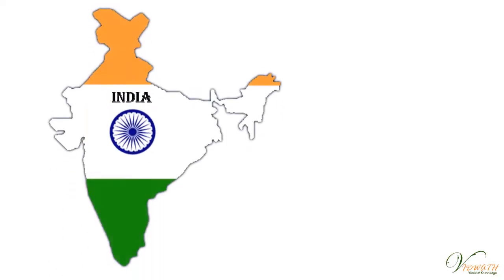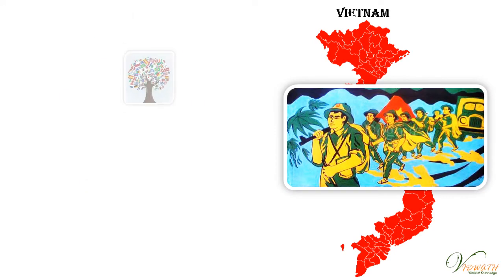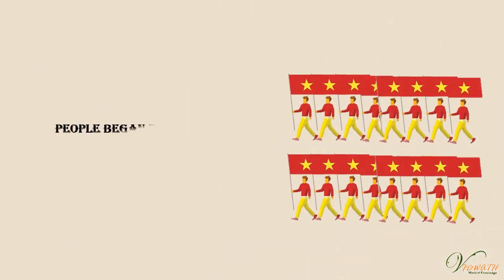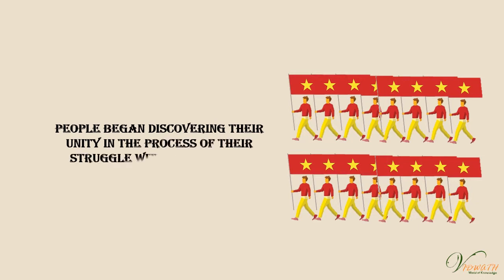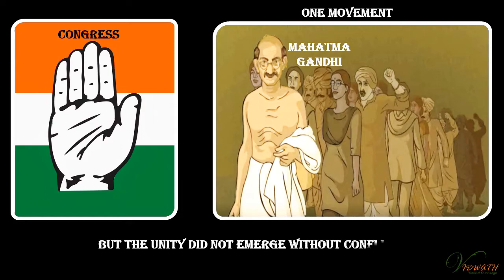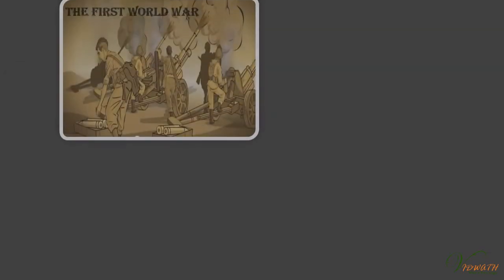In India, as in Vietnam and many other colonies, the growth of modern nationalism is intimately connected to the anti-colonial movement. People began discovering their unity in the process of their struggle with colonialism. The Congress under Mahatma Gandhi tried to forge these groups together within one movement, but the unity did not emerge without conflict.